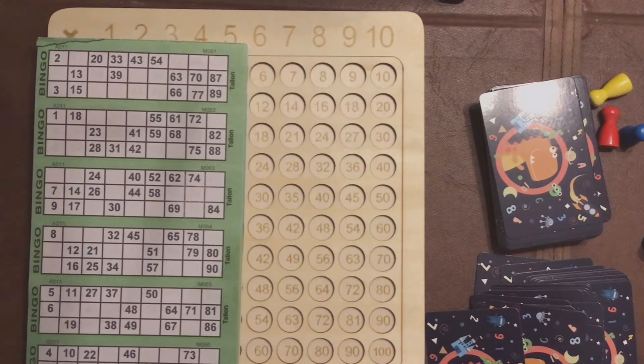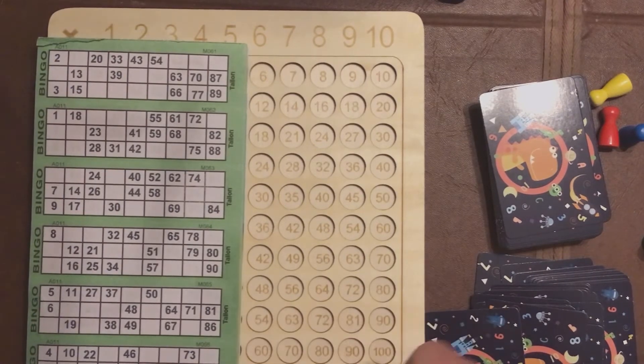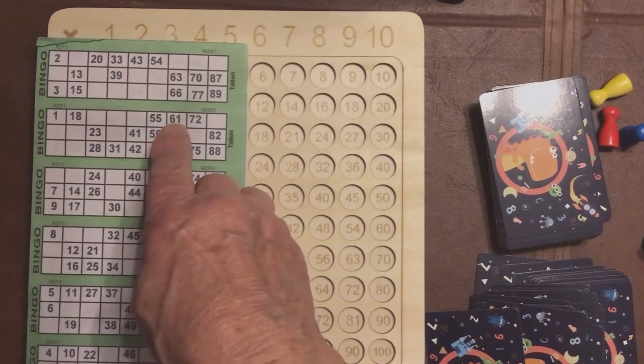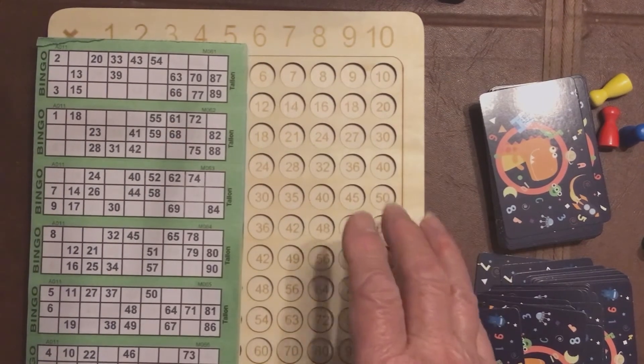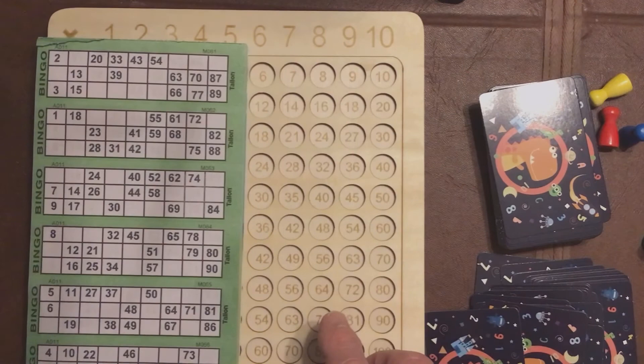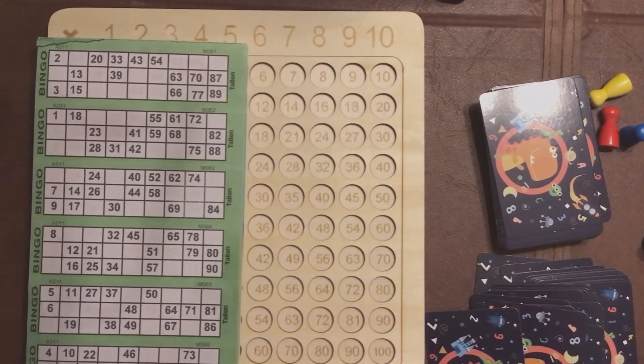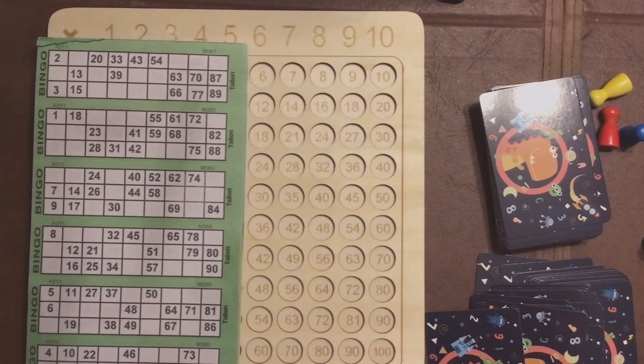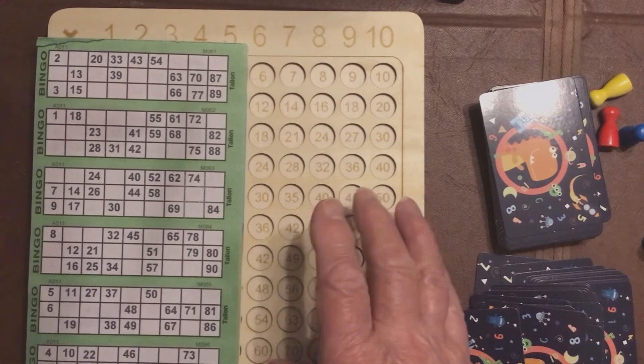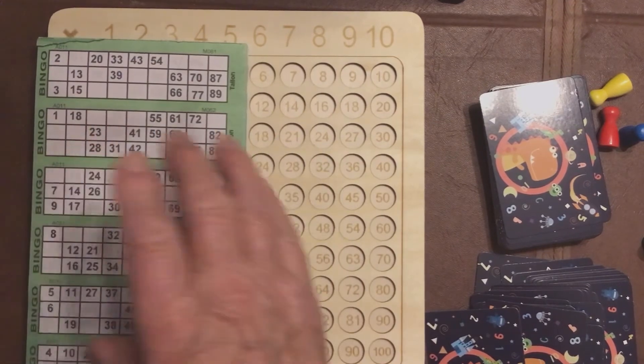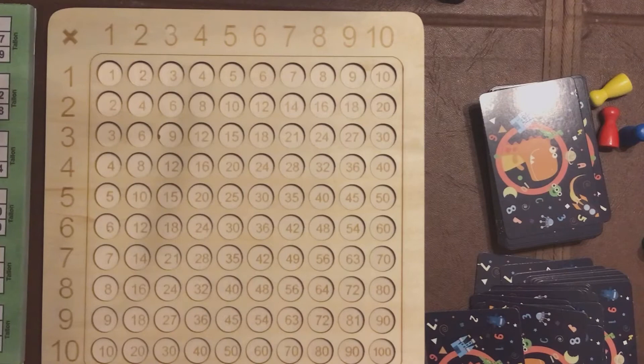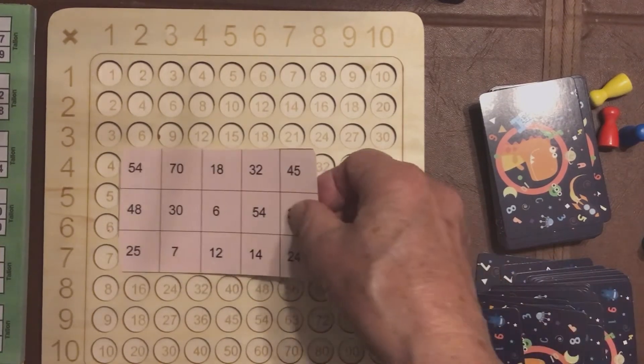The only thing wrong with this particular card is that there are numbers on here which don't appear on here. For example, 61. You can't get 61 out of this 10 by 10. There's no such way. 51. It's very hard to get a 51. So, I got away with this. I threw this away, or put it away, and I made my own card like this.